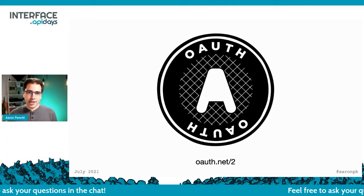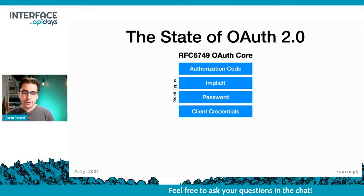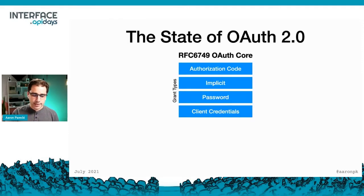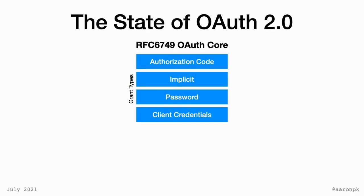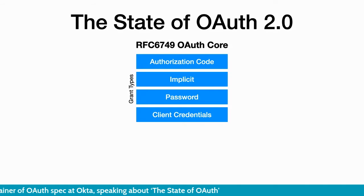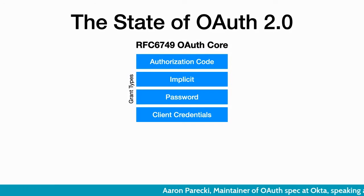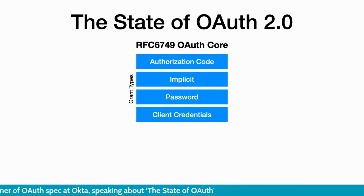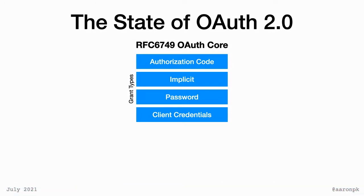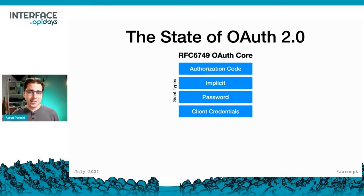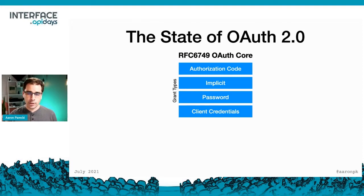OAuth is not a single spec — it's actually a collection of several specs. Think of them as building blocks where each provides a specific feature and you can stack them to build a complete system. The core document, RFC 6749, is the original core OAuth 2 spec. It defines what are called grant types — different ways an application can get access to data in an API. The most common way that access is represented is with what we now know as a bearer token.